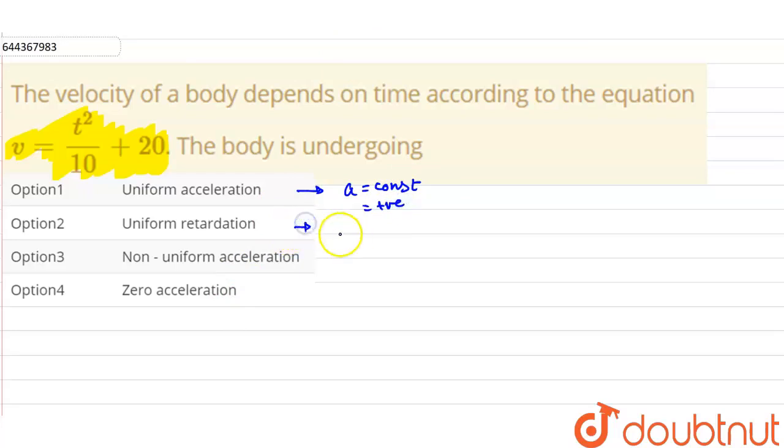And uniform retardation is when our acceleration is constant but negative. Now talking about the non-uniform acceleration, so non-uniform acceleration will be when our acceleration is not constant. And zero acceleration is when acceleration is zero.